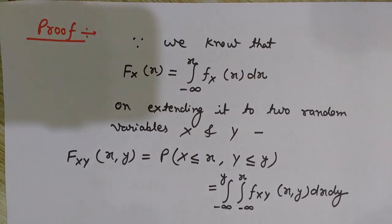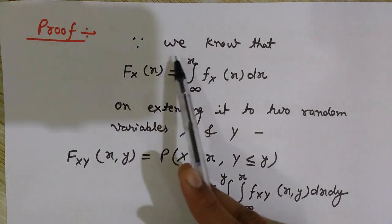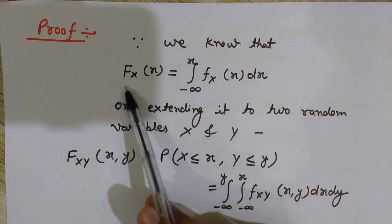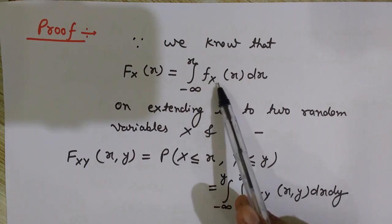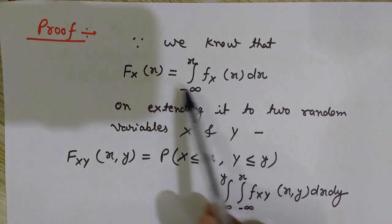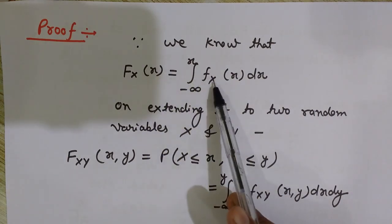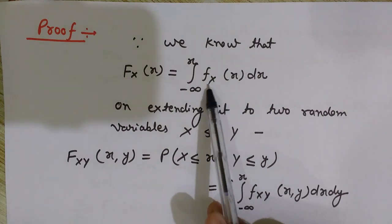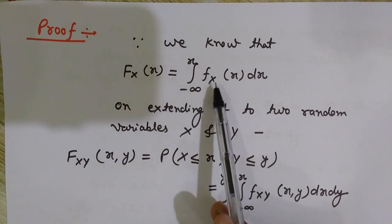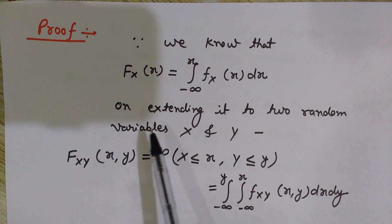Here we will see the proof of how we can get the probability density functions for random variables x and y from the joint probability density function — in that case these PDFs will be known as marginal densities or marginal PDF. We know that the cumulative distribution function for random variable x is denoted by the integral from minus infinity to x of f(x) dx. This is the standard formula to get the CDF from the PDF.